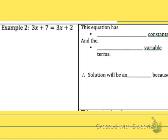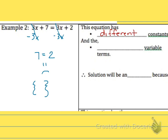Now let's take a look at the next example. If I get the variables to one side, I subtract 3x from both sides to eliminate a variable off one side, but what happens is I get a cancellation and I end up with 7 is equal to 2. This is untrue, so that means my solution is the empty set. This occurs when I have different constants — 7 and 2 — and the same variable terms: 3x and 3x. The variable terms drop out, leaving a false statement.